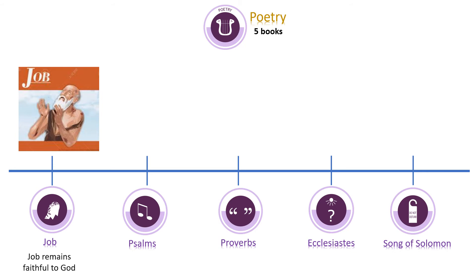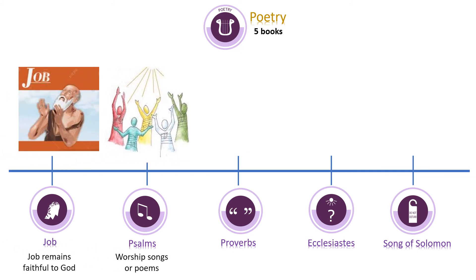Now we are in the poetry section. All these books are written in songs or poems. The story of Job is about a man who loses everything, suffers immensely, trusts God throughout, and gets back more than he had before. The book of Psalms is probably the most popular book — a lot of our worship songs are born out of the Psalms. The word 'Psalms' actually means 'sacred song or poem used in worship.'